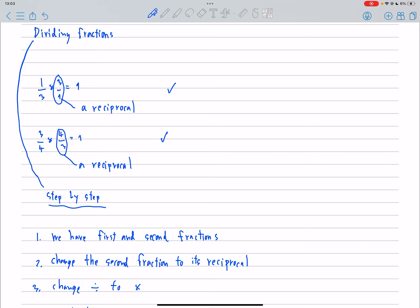If we have 1 over T, T over 1 is a reciprocal of 1 over T because when we multiply both numbers, it will be equal to 1.